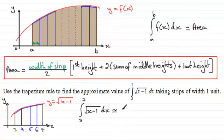So we can see by the formula we've got to do the width of a strip. And the width of a strip here is clearly going to be 1 unit. So we've got 1, and it's divided by 2.